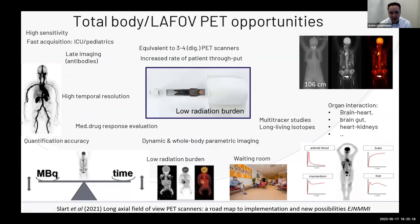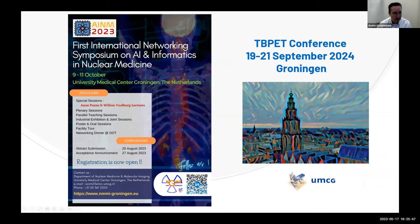Looking at all the opportunities — I only discussed children, ICU patients, and infection imaging — but there is also antibody imaging, increased patient throughput, high temporal resolution, drug response evaluation, parametric dynamic imaging, multi-tracer studies, long-lived isotopes, and leukocyte-organ interaction. We hope to explore these in the next few years. Finally, every year we hold a congress at our center. This year it focuses on artificial intelligence, but next year we host the global Total Body PET Conference in our center and city. Thank you for your attention.